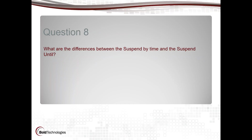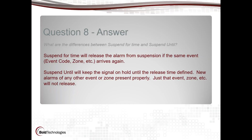Question eight: what are the differences between suspend by time and suspend until? Suspend for time will release the alarm from suspension if the same event — meaning the same event code and zone — arrives again. So if I have a fire alarm on zone one that keeps coming in and I suspend it for five or ten minutes every time, it's going to release that suspension if it continues to come in. Suspend until will keep the signal on hold until the release time defined.